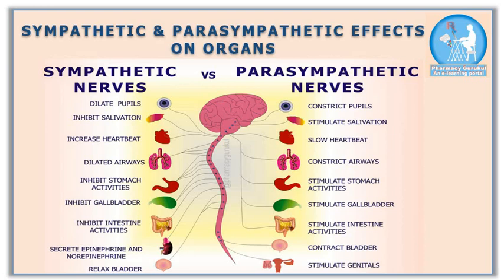In sympathetic response, stomach activities are inhibited. As you are in an emergency situation, digestion is less important for your body. Once you get over the emergency, your digestion activity will be resumed. Whereas in parasympathetic response, your stomach activities are stimulated and lots of enzymes and digestive juices are secreted inside the GIT to make digestion faster.